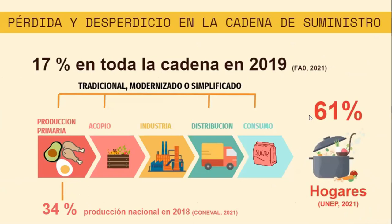Lo vemos de tipo tradicional, de tipo modernizado o simplificado, en donde el 17% de estos alimentos, por lo menos hasta el 2019, se pierden en todo este transcurso, desde la producción primaria, el acopio, la industria, la distribución y el consumo. Y en México, en el caso específico de México, se pierde el 34% o más de los alimentos que se producen a nivel nacional. Este indicador es altísimo debido a que nosotros no deberíamos de presentar este tipo de pérdidas durante la producción primaria, y eso es debido al tema de las tecnologías que hay para la conservación de los alimentos o al manejo post cosecha de los alimentos.